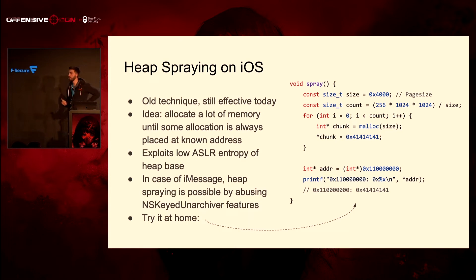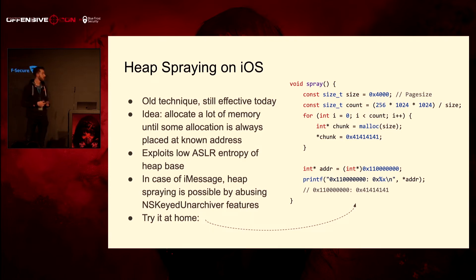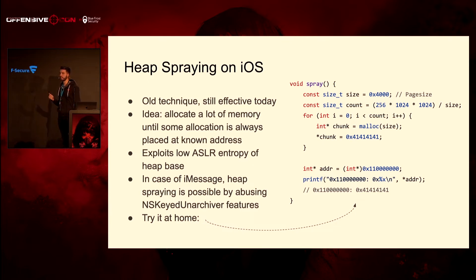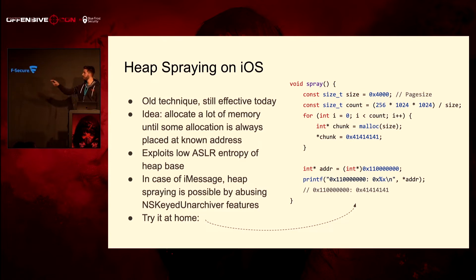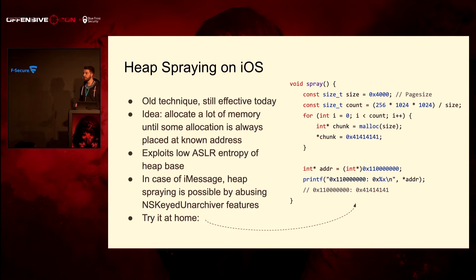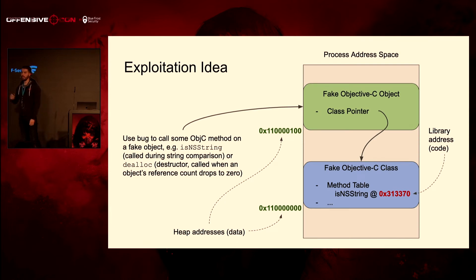The obvious problem is ASLR. We don't actually know where anything is in memory — we don't know where our fake objects end up, and we don't know where libraries are, so we have no code pointers. We'll tackle this in two parts. Part one is heap spraying, which is an old technique but still works. Basically, you allocate maybe 256 megabytes of memory. This is fairly easy over iMessage due to the unarchiver. Once we've allocated that much memory, at a known address — hex 0x1170s — there will be our control data, our fake objects.